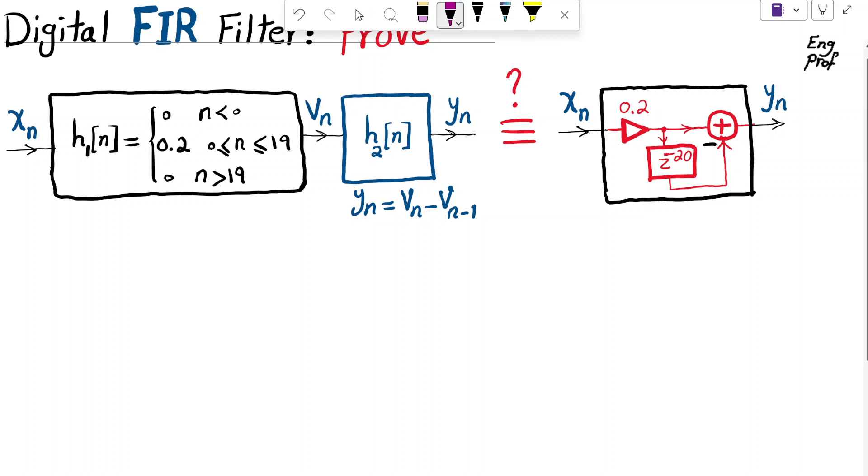In the cascade of two FIR filters shown here, FIR filter 1 and FIR filter 2 in cascade, we want to show that with the given impulse responses H1 of n and H2 of n, the overall system effectively is equivalent to this simple FIR filter that is shown here.